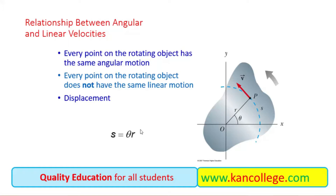So what is the relationship between linear speed and angular speed? We will derive that relationship in the following slides. As we know, arc length S is always equal to R theta — where R is the radius of the circle and theta is the angle.